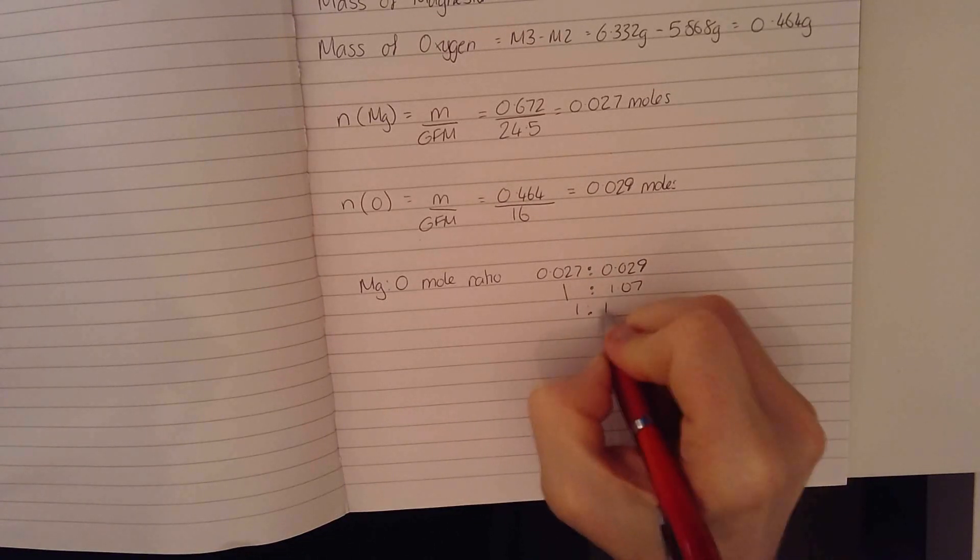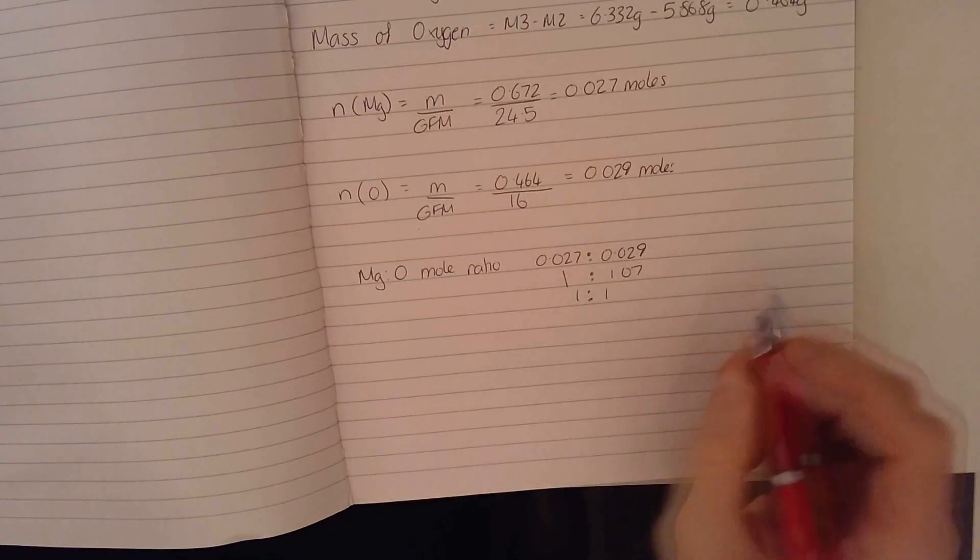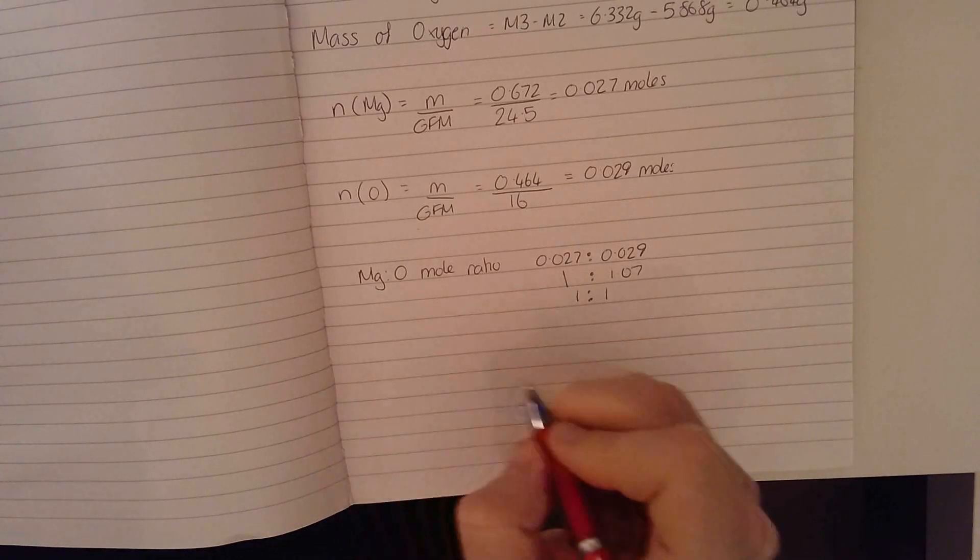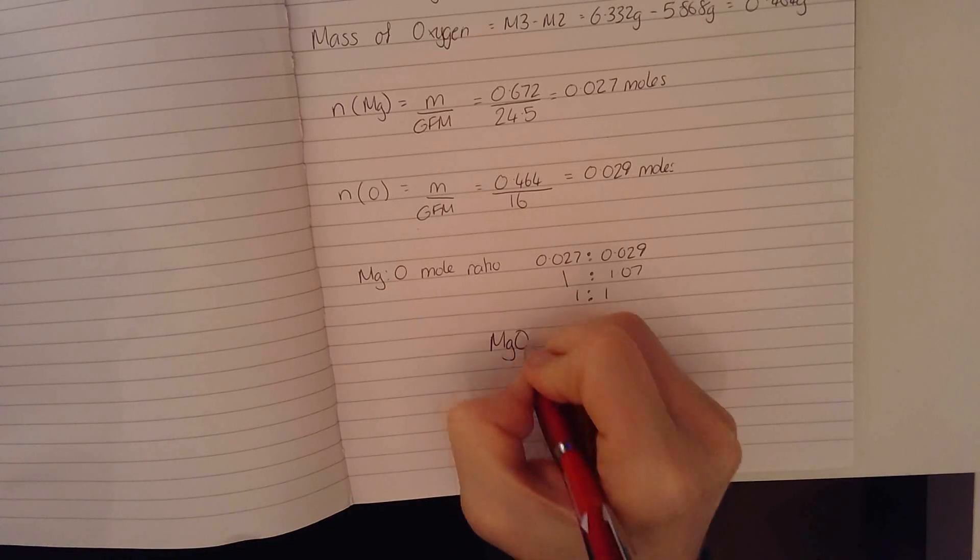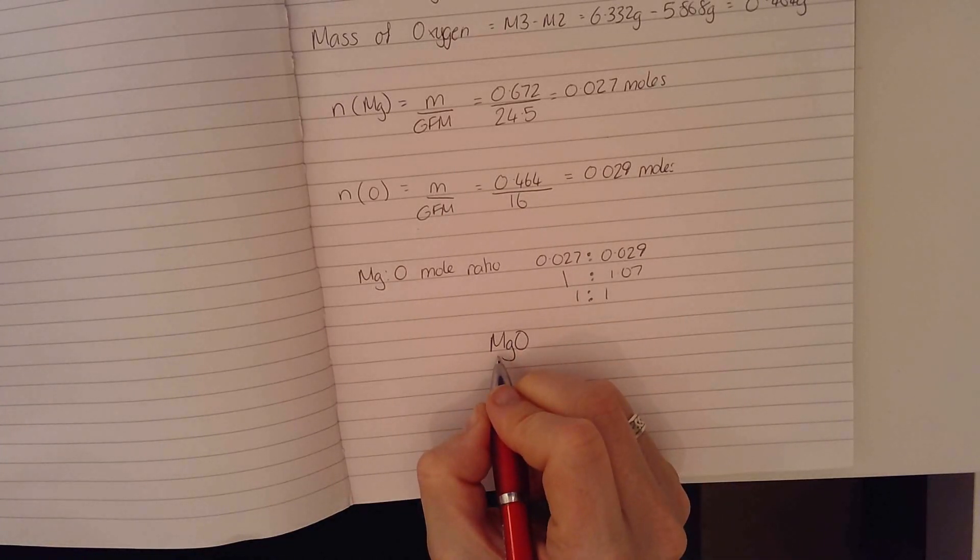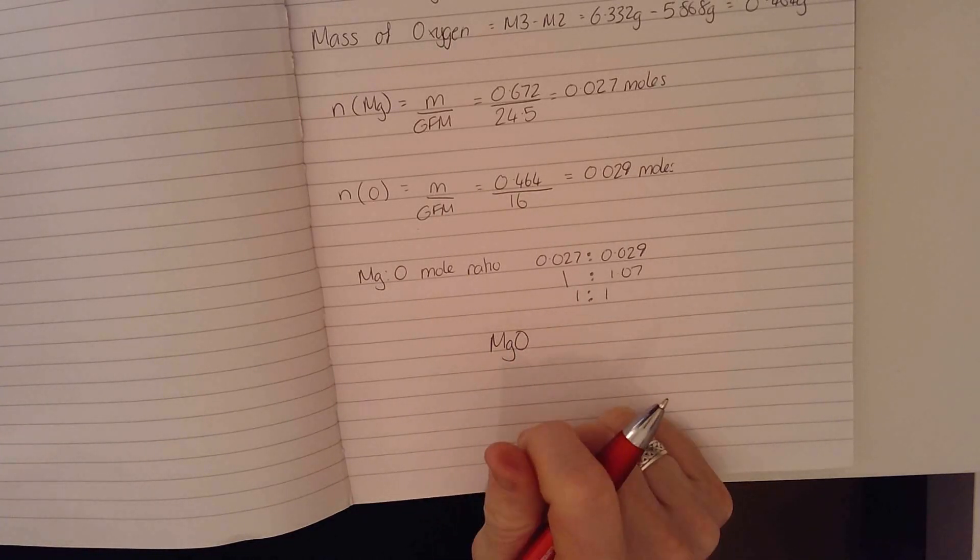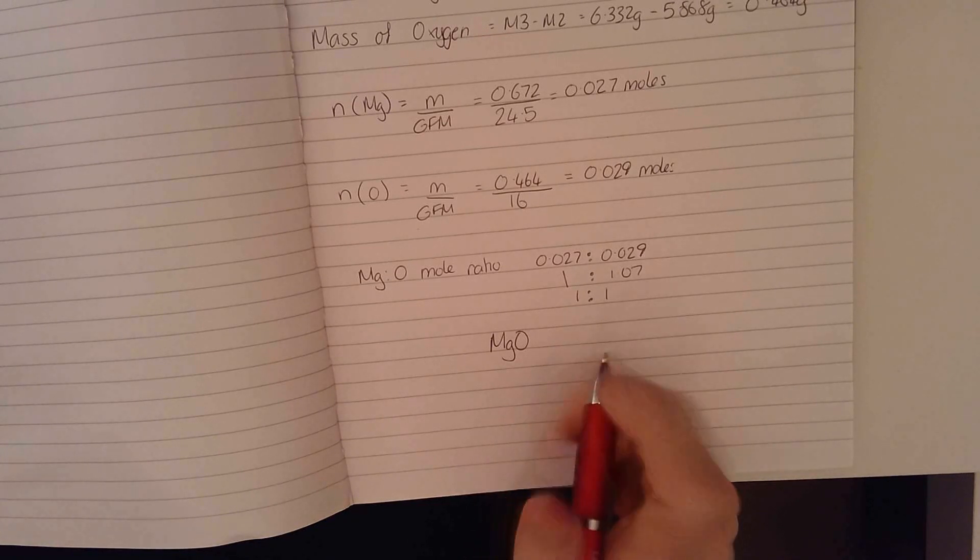So it's pretty much a 1 to 1 mole ratio, which means that the formula of magnesium oxide is MgO. I have 1 mole of magnesium atoms bonding to 1 mole of oxygen atoms.